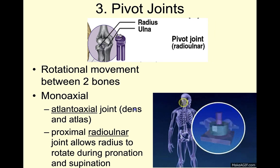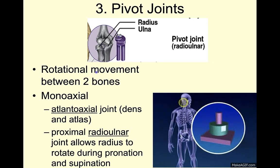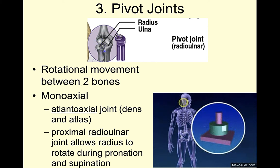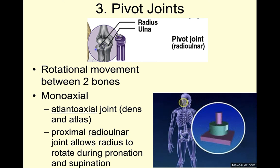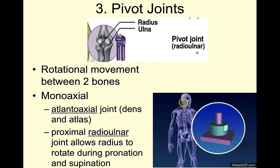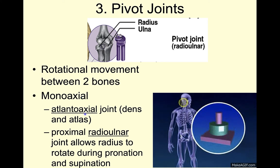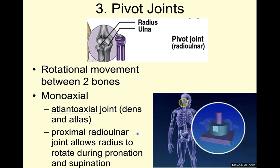The third type are our pivot joints. We have this rotation between two bones — between our radius and our ulna, the radius moves around the ulna, so it's a pivot joint and we can call that our radioulnar joint. This is monoaxial. Another example is our atlantoaxial joint where we talked about the dens and the atlas, as well as our proximal radioulnar joint.